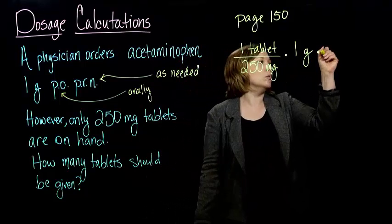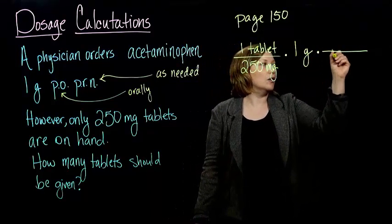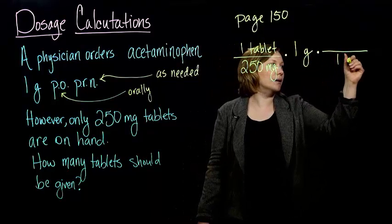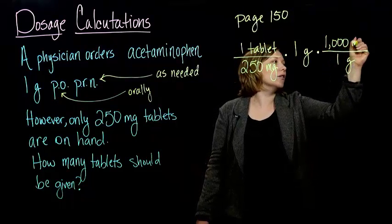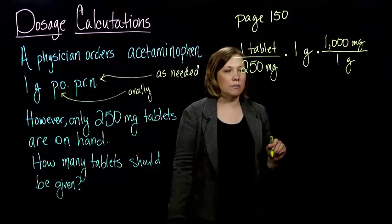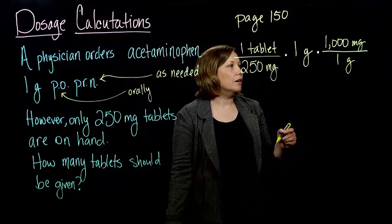You bet. So if we want the grams to cancel out on the top, we need grams in the bottom. And we know there are 1,000 milligrams per gram from our section about the metric system.